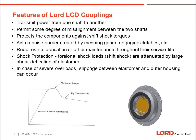The coupling also provides a level of shock protection. Torsional shock loads from shift shock are attenuated by the large deflection of the shear elastomeric element inserted in the outer member of the coupling. In the case of severe overloads, slippage between the elastomer and the outer housing can occur, which also provides a level of protection to both the engine and transmission.